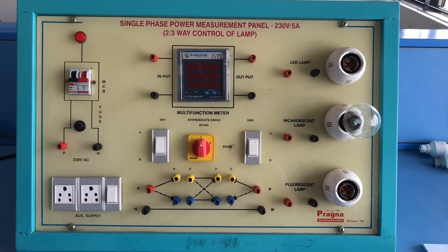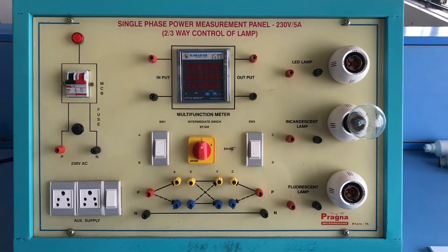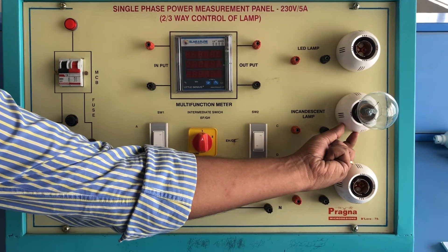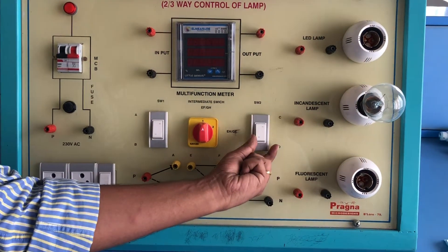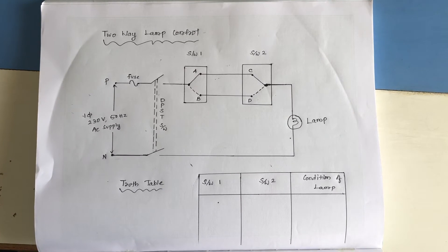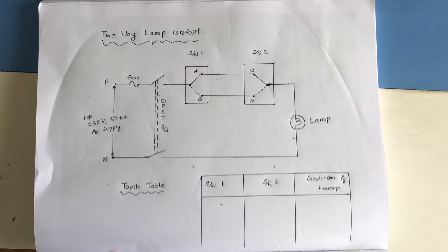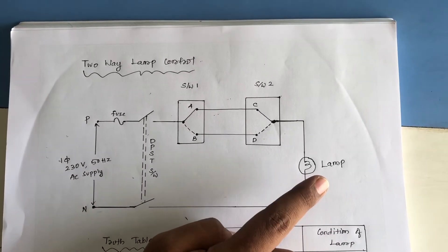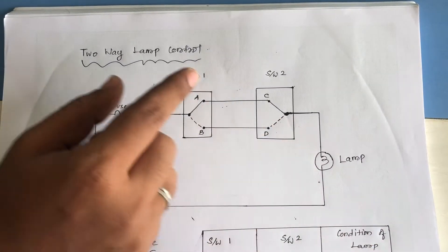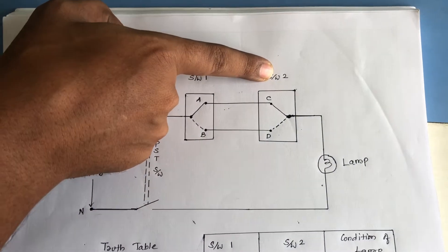The main aim of this experiment is to understand how a single lamp is controlled by two switches. In the circuit diagram, a lamp is controlled by two switches named switch 1 and switch 2.